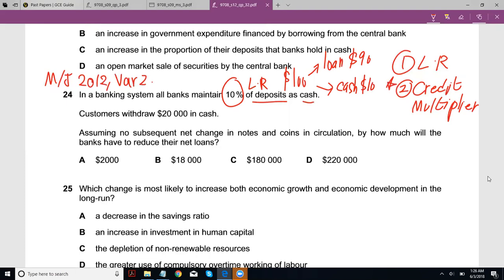Anyhow, customers withdraw $20,000 in cash. Assuming no subsequent net change in notes and coins in circulation—so the money supply overall with regards to notes and coins is the same—how much will the banks have to reduce their net loans?